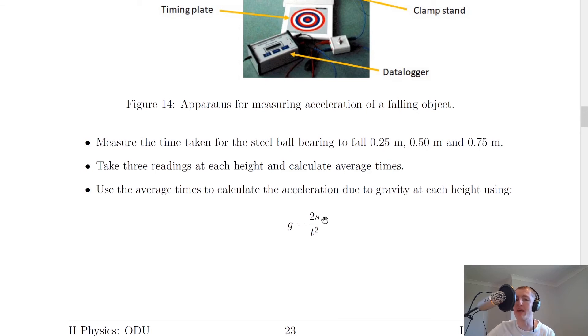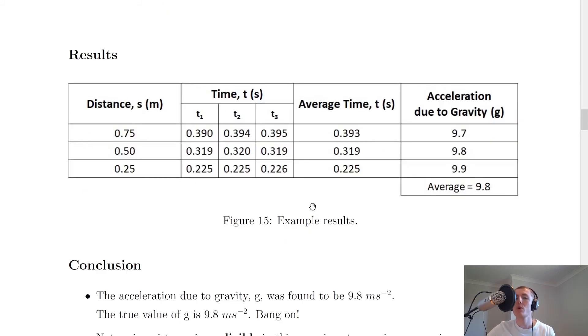So our heights are given by s, our time t is obtained from the timer or data logger over here, and we can then calculate our g values. So here is a sample set of measurements that I took. So we've got distance s in meters, time t in seconds, and we've got three columns of time because we repeated it three times. And we've got average time t in seconds, and then acceleration due to gravity g once you've plugged your numbers into the calculator. And then I've taken an average of that.